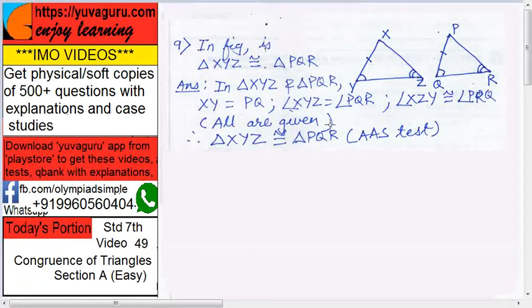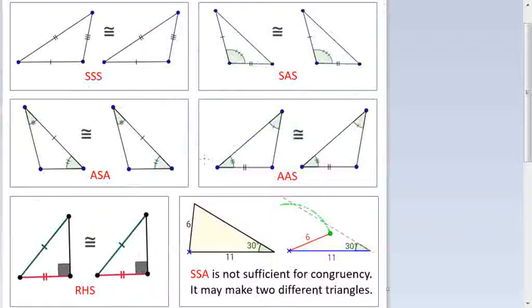So all are given over here. Therefore, triangle XYZ is congruent to triangle TQR by AAS test, angle-angle-side test in both the triangles.